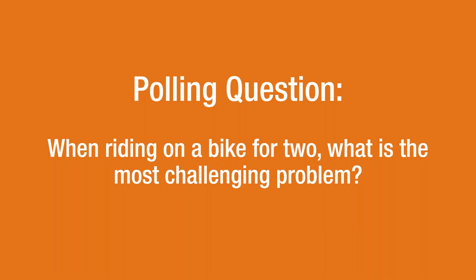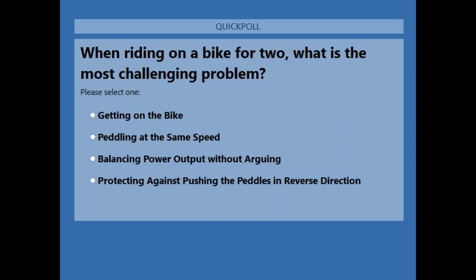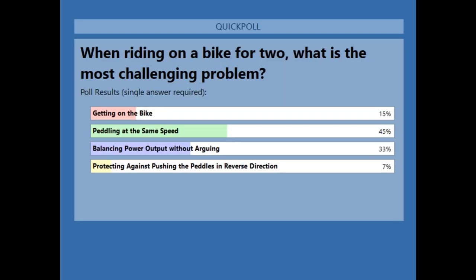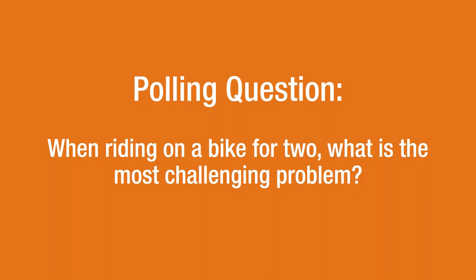Second polling question: when riding on a bike for two, what is the most challenging problem? Options are: getting on the bike, pedaling at the same speed, balancing power output without arguing, or protecting against pushing the pedals in the reverse direction. Most of you said pedaling at the same speed. This analogy works extremely well with power generation — two people on a bike for two is very similar to two generators operating on the same bus. We have the same problems.